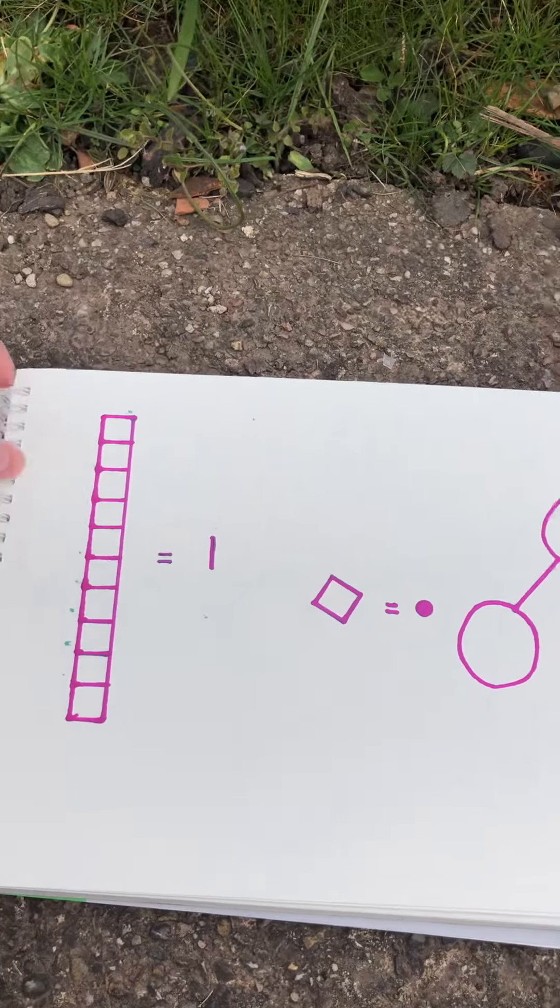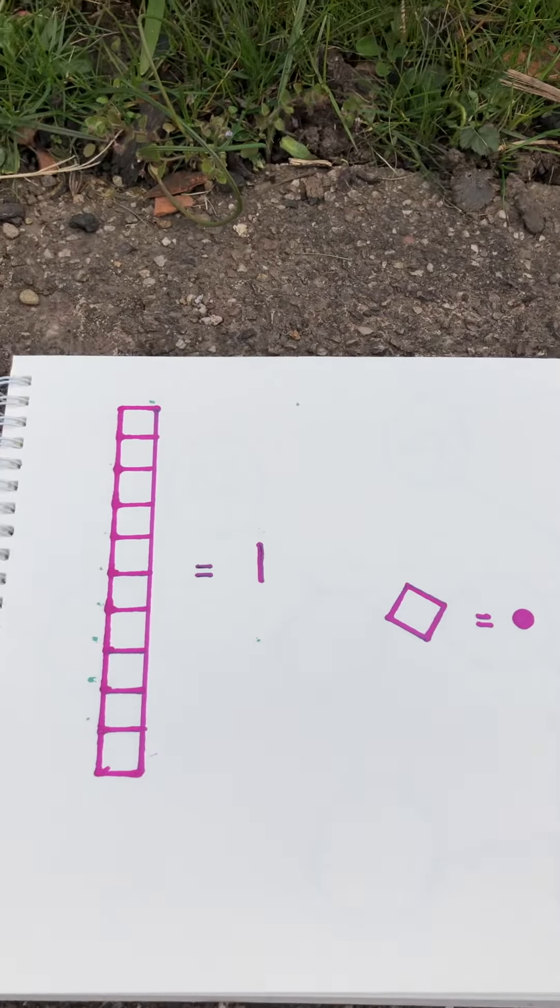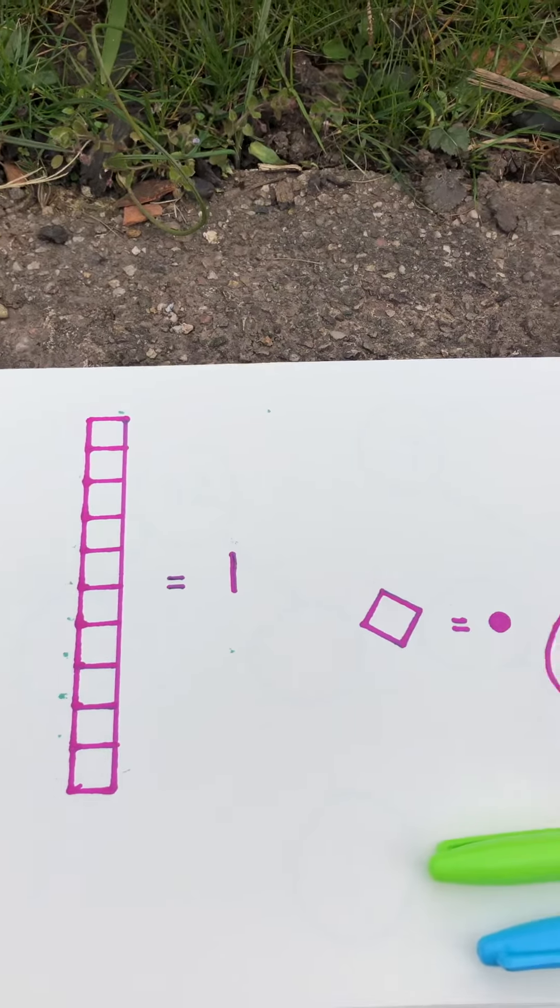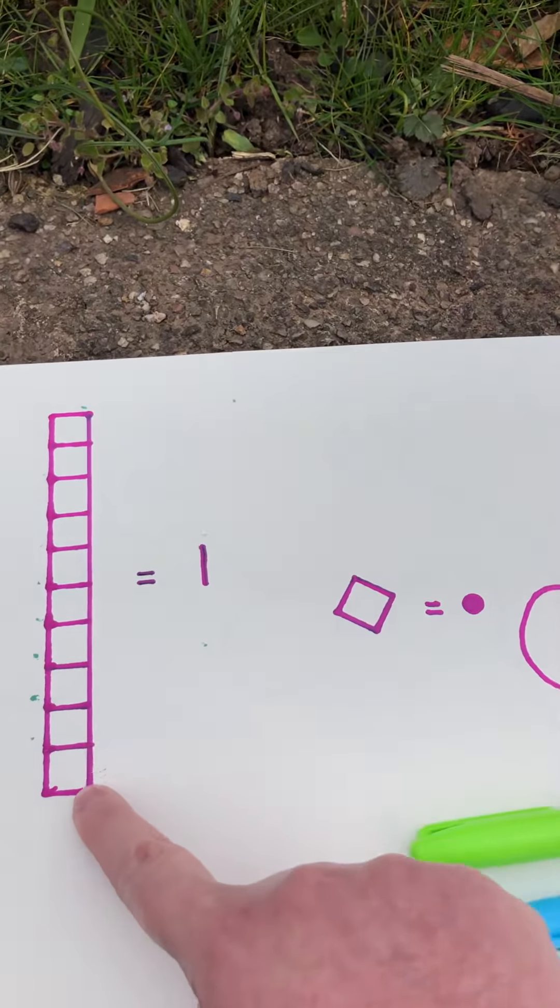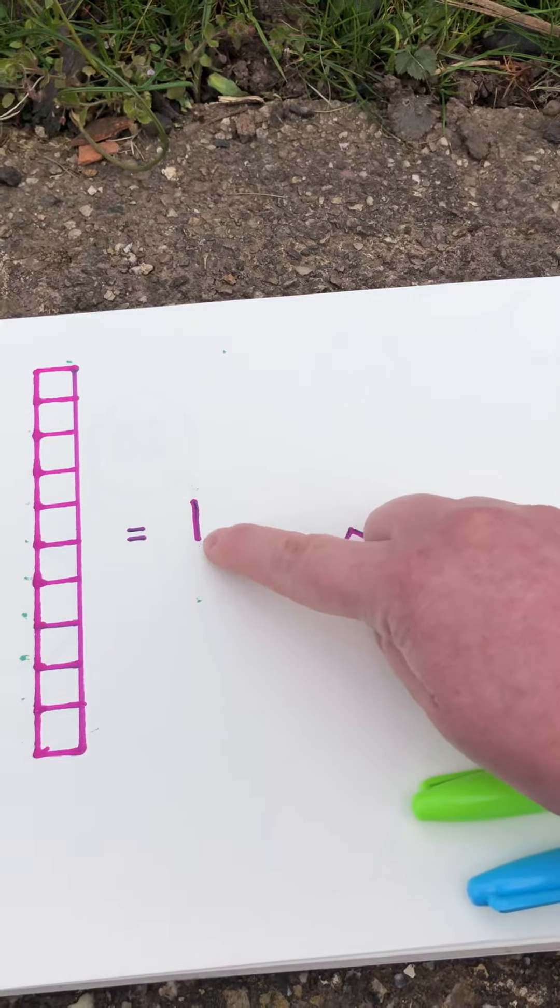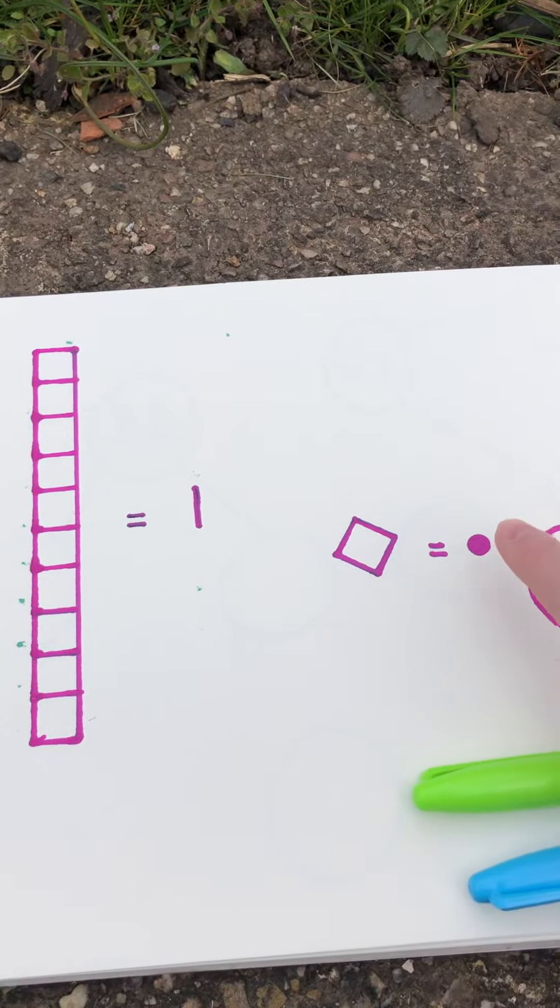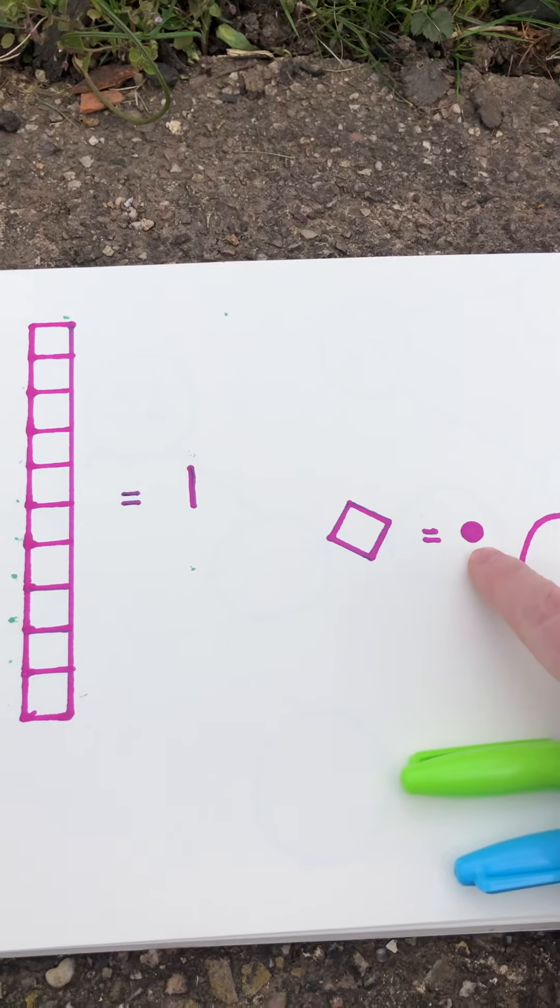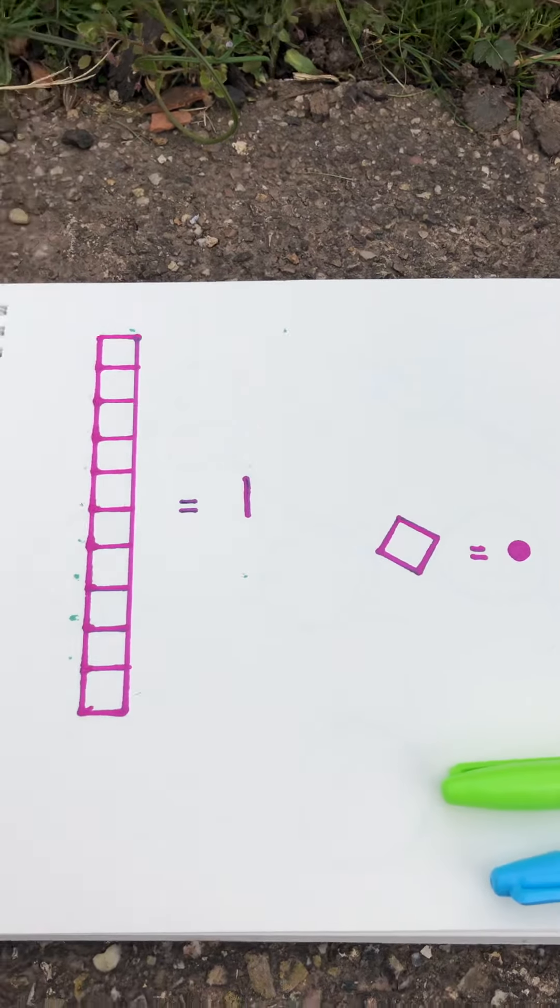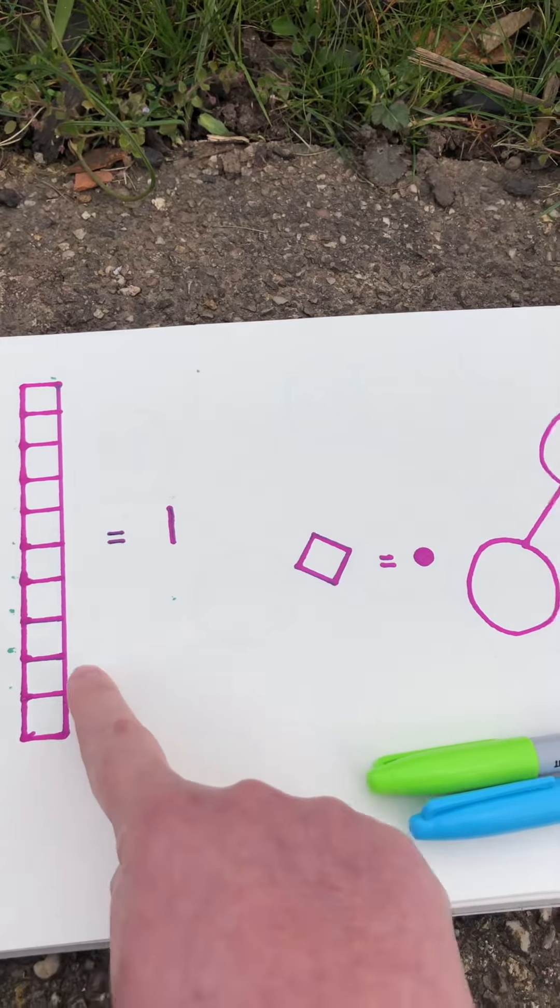So here, I have drawn some pictures to represent the numbers. So we have got a tens rod, which when we do it in our part-part-whole is going to look like a stick. And a 1, which when we put it into our part-part-whole is going to look like a circle.